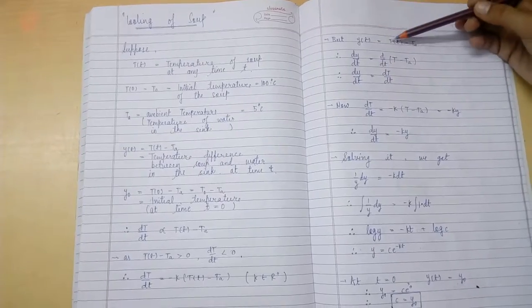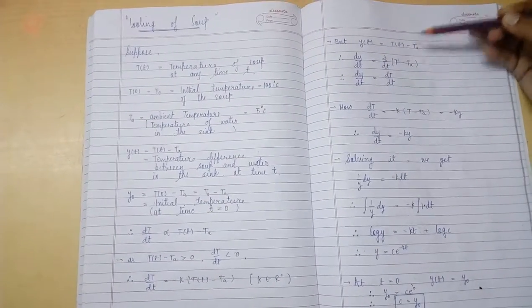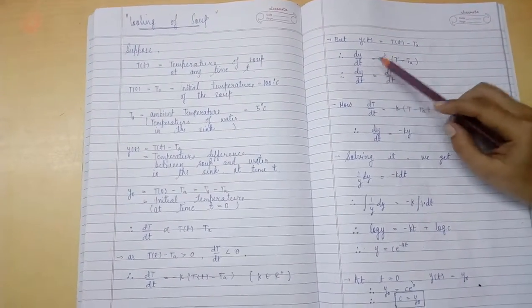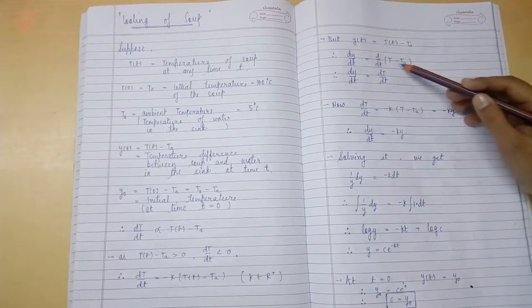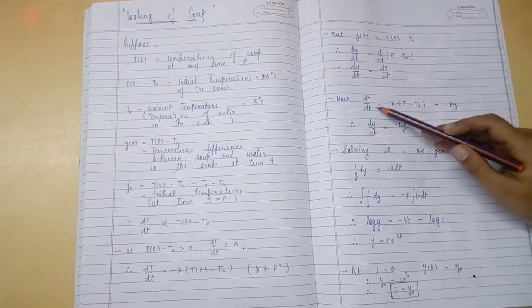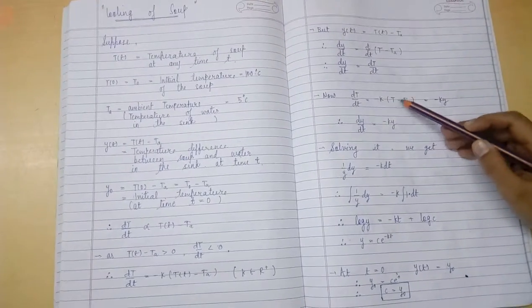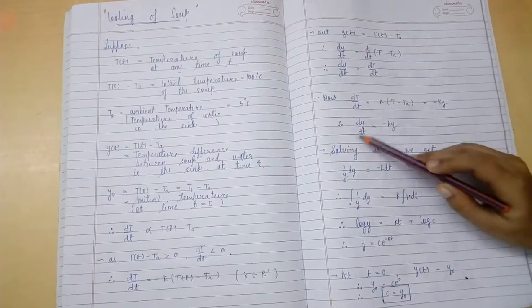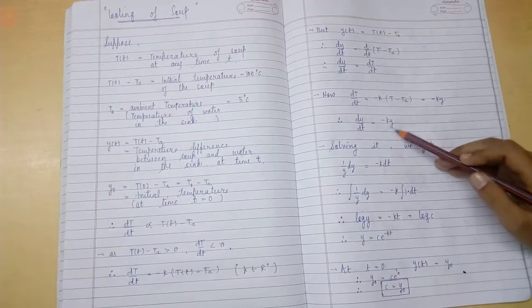But Y(t) is equal to T(t) minus Ta. Therefore, dY by dt is equal to d by dt of T minus Ta. Therefore, dY by dt is equal to dT by dt. dT by dt is equal to minus K T minus Ta. So, dY by dt is equal to minus K Y.